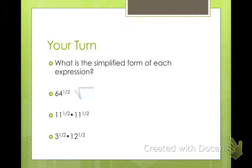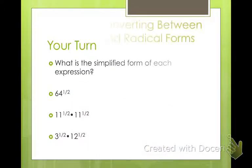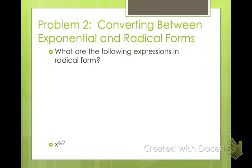So I'm going to rewrite this as the square root of 64. And the square root of 64 is 8. This is the square root of 11 times the square root of 11, which is the square root of 121, or 11 squared, which is 11. And this one is the square root of 3 times the square root of 12. 12 times 3 is 36. The square root of 36 is 6. So these are pretty simple. Barely easy to do. Shouldn't be having any problems with those.